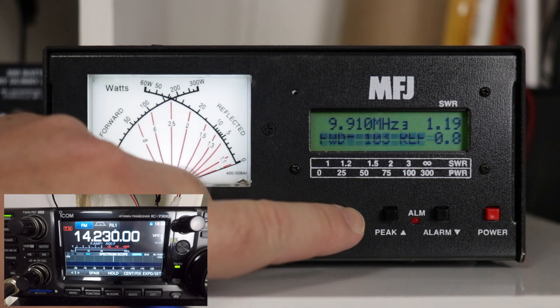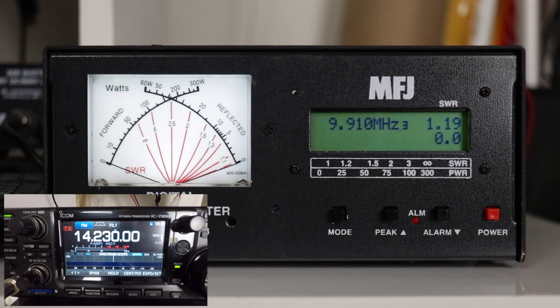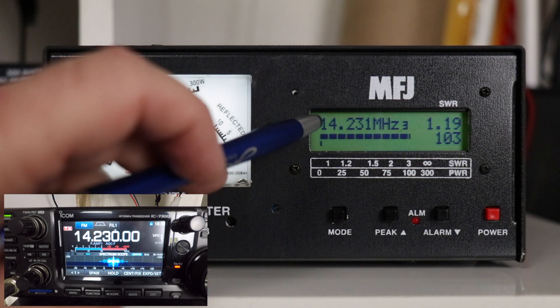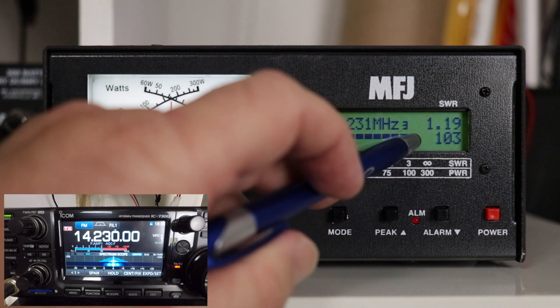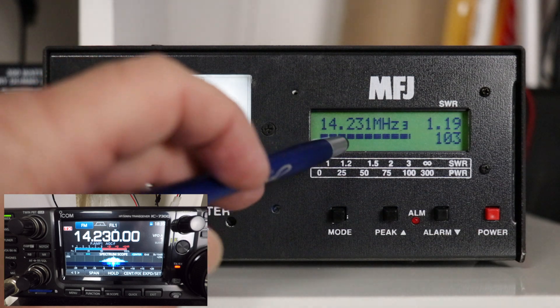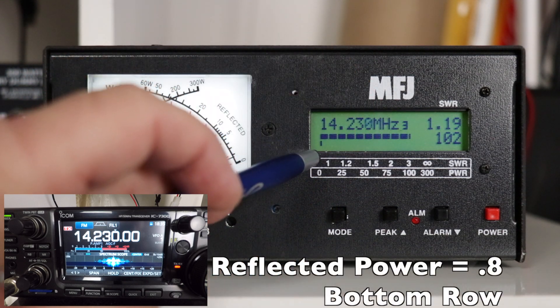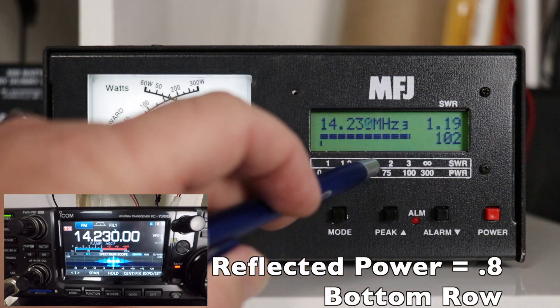Now for the different bars, this shows forward and reflected power. Got your forward power on the top, corresponds with the scale down here. And your reflective power, 1.19 showing down here, which is gauged by the top row.